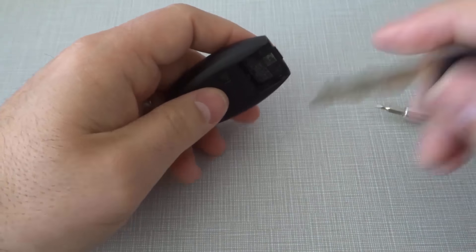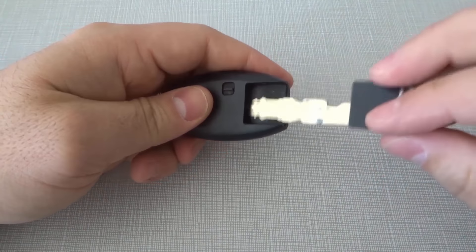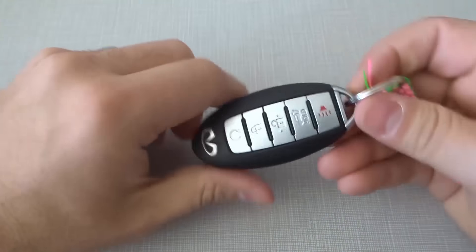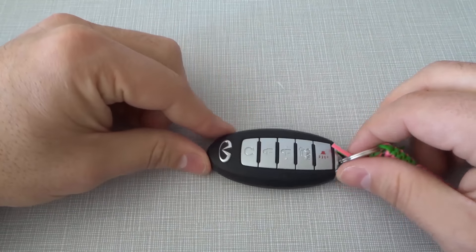And then you want to take your key portion and you want to just slide your key portion back in just like that. It clicks into place and you've now replaced the battery on your Infiniti key fob.